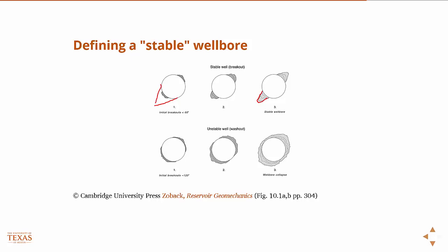It's when the initial breakouts are wider than 90 degrees — say, 120 degrees — that problems arise. This can be due to a wide area exceeding the strength of the rock, causing the initial breakout to be greater than 90 degrees. This will lead to wellbore collapse in most cases.